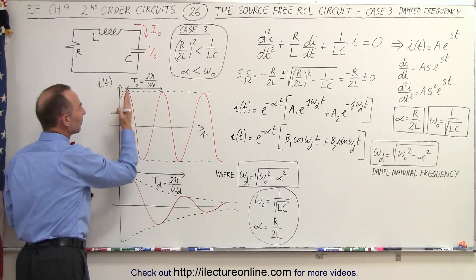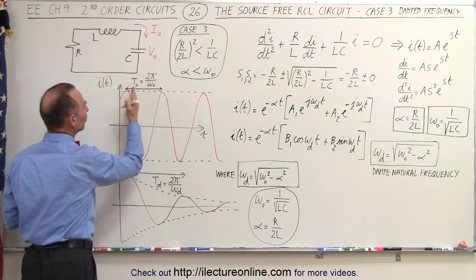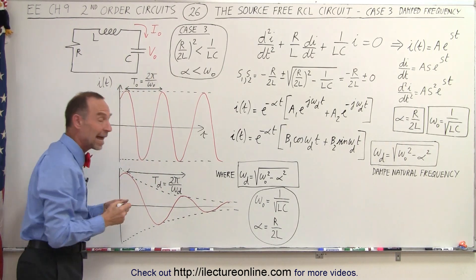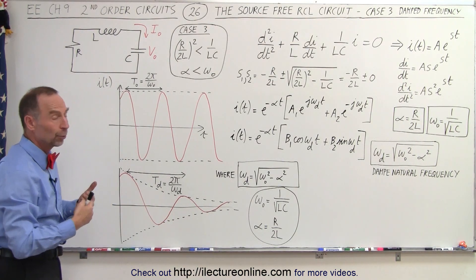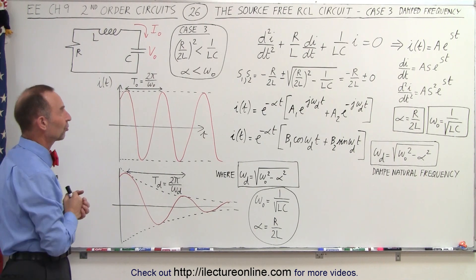Notice that the frequency or the period from one peak to another would simply be 2π divided by the natural frequency of that circuit. But what happens when there's a dampener, in other words a resistor, in the circuit?